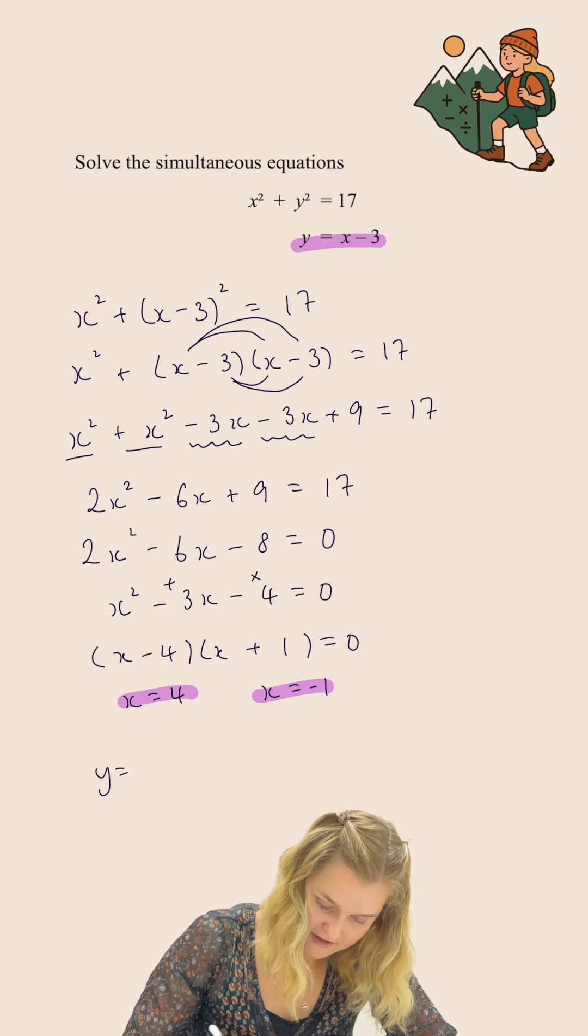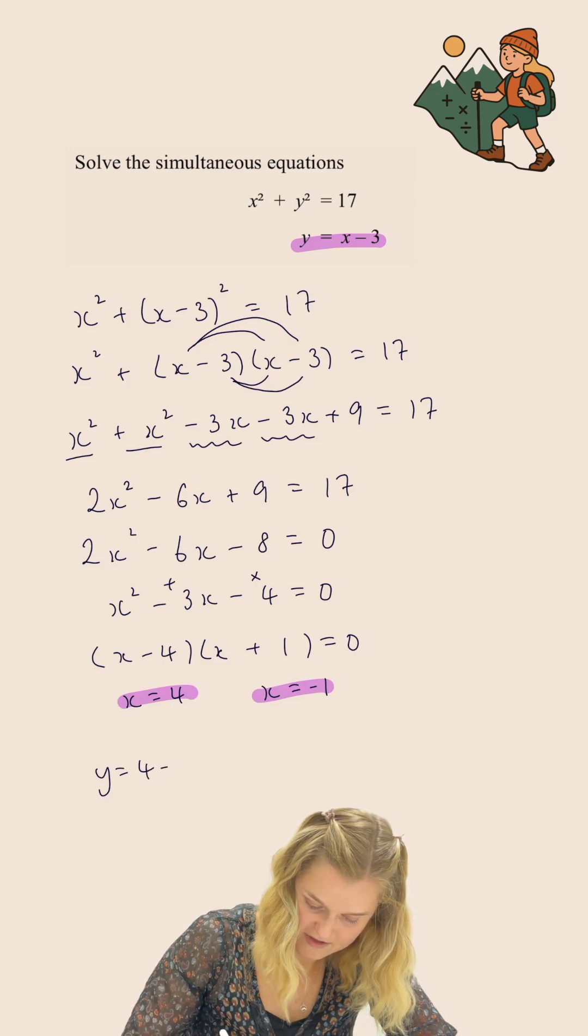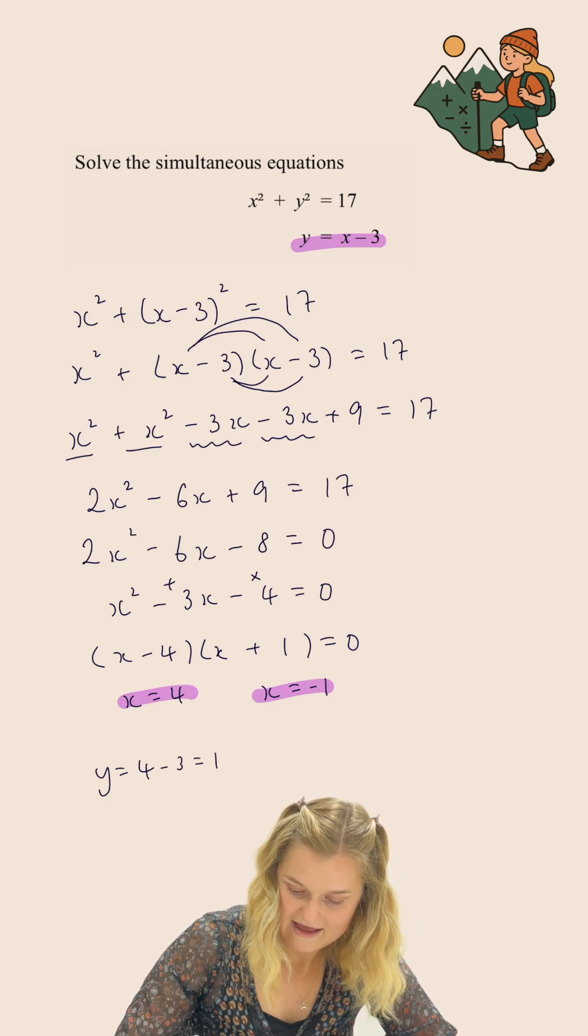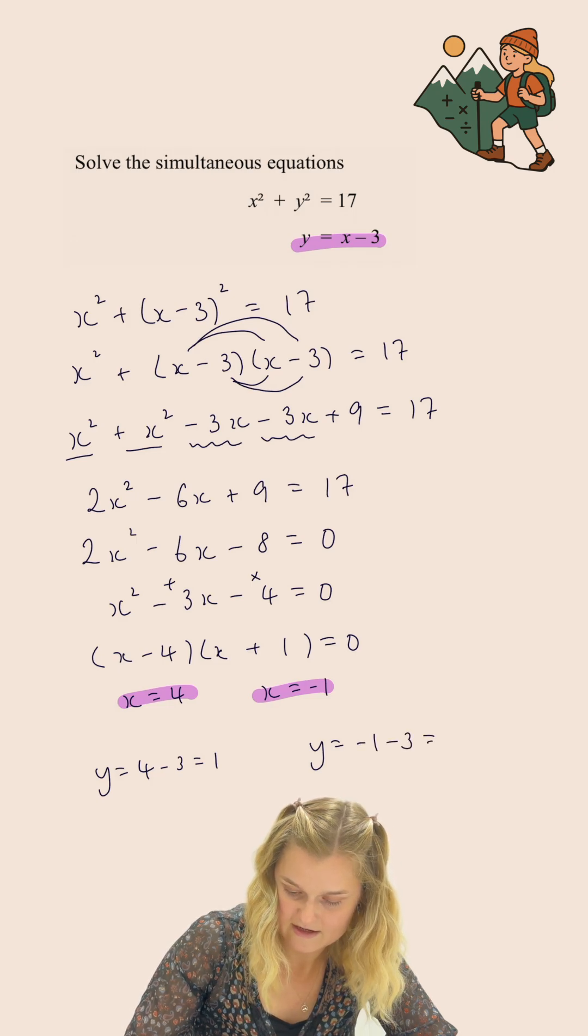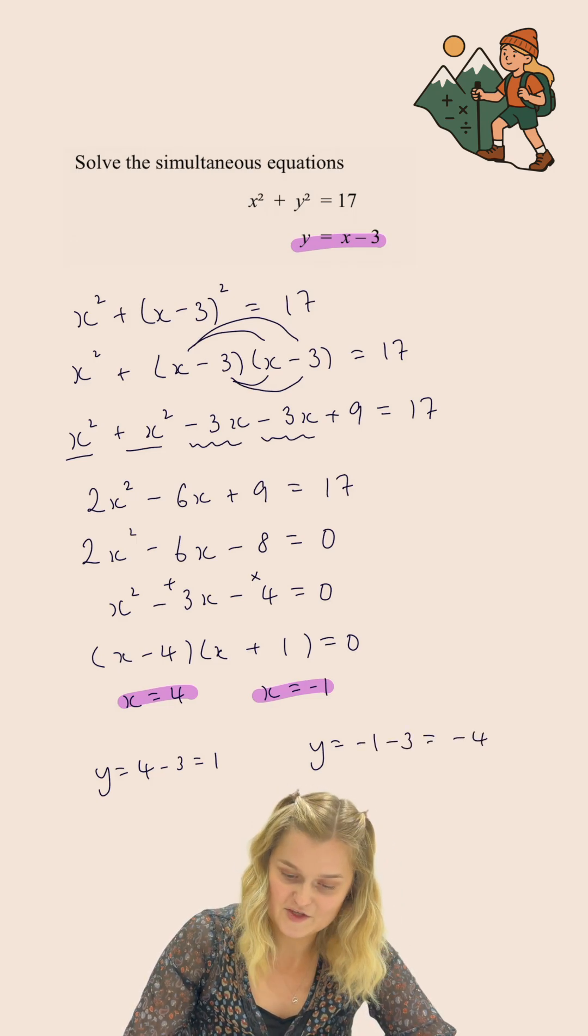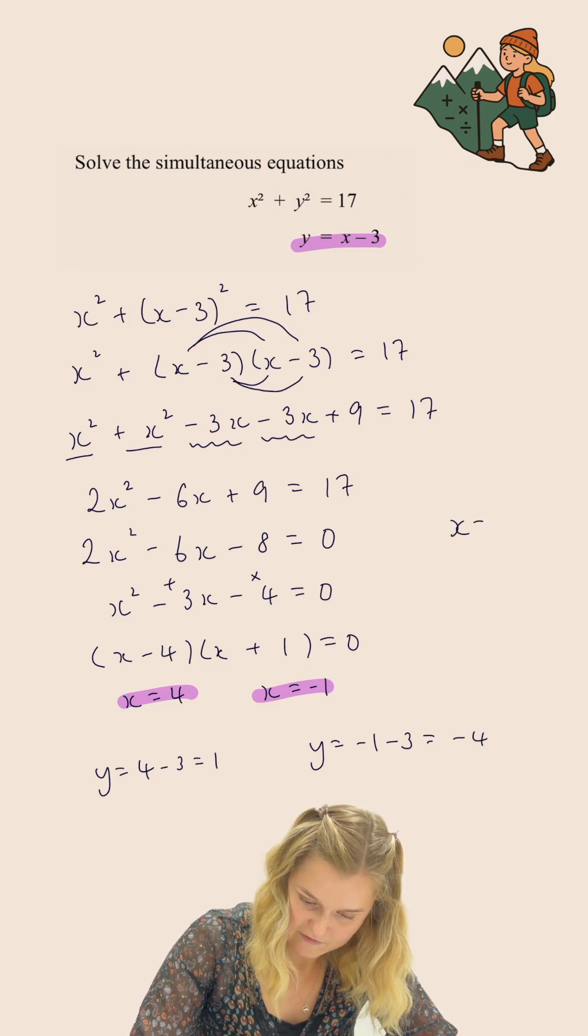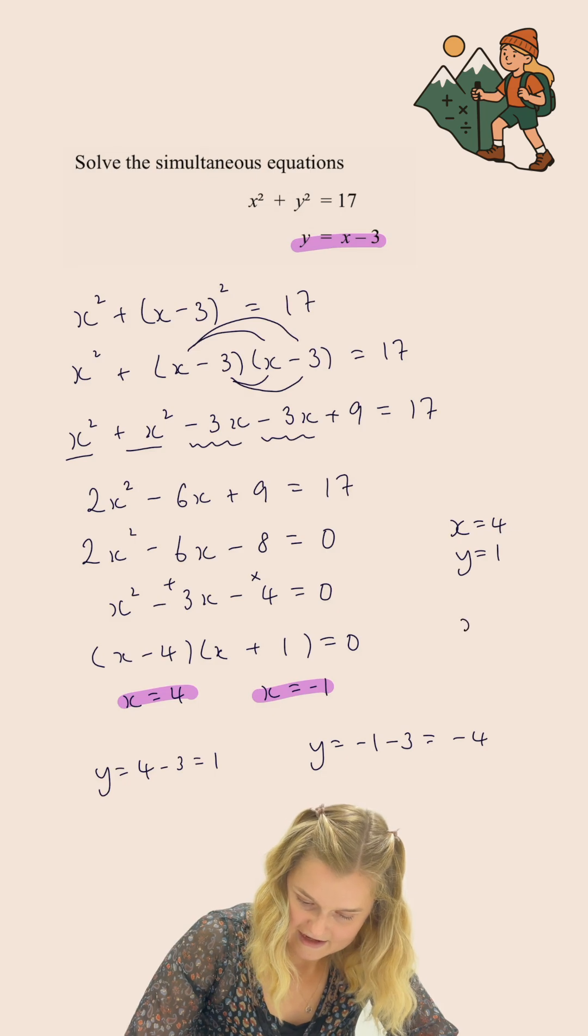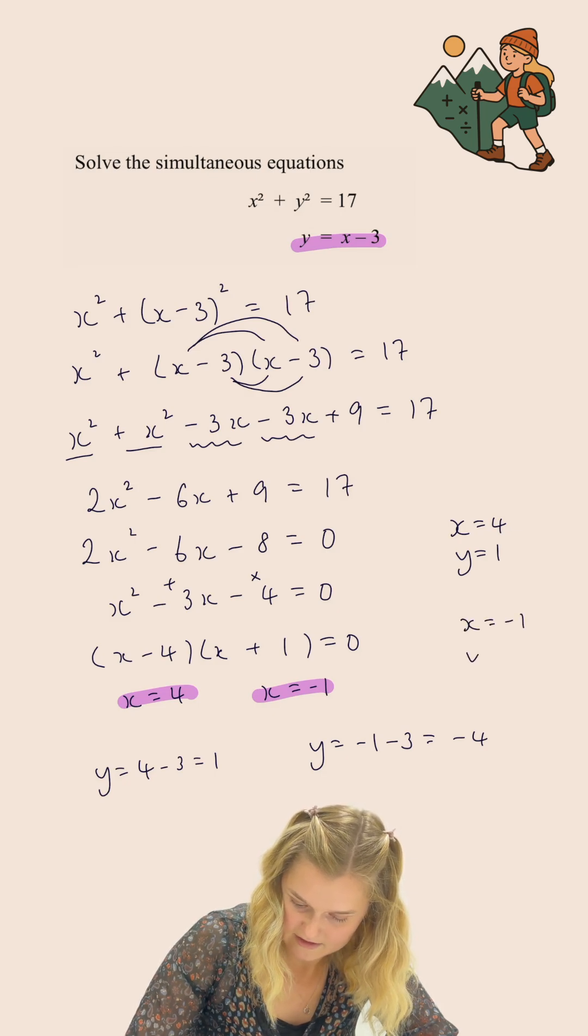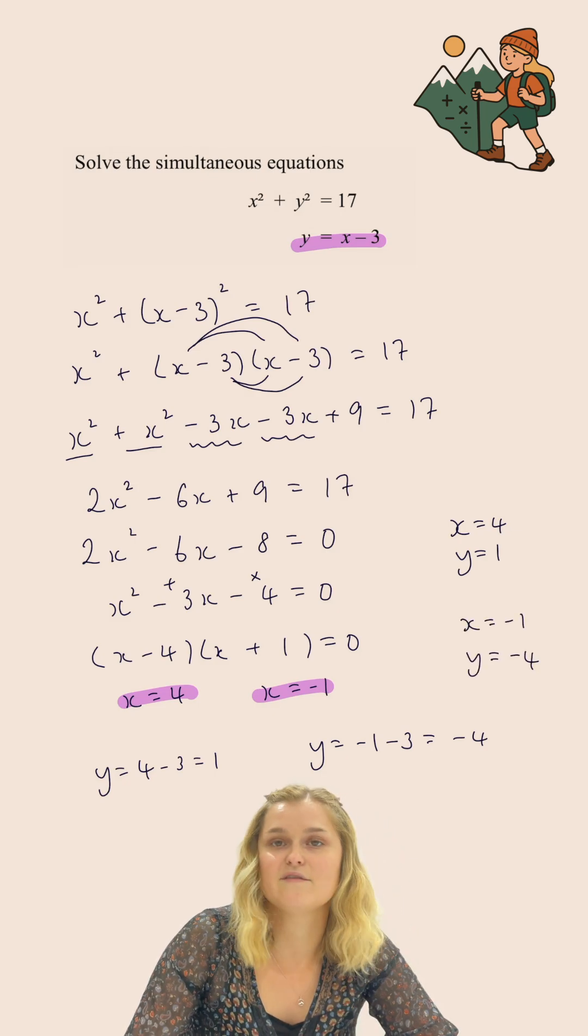So y is going to equal 4 minus 3, which is 1, and y is going to equal negative 1 minus 3, which is negative 4. And so my final answer is x equals 4 and y equals 1, and x equals negative 1 and y equals negative 4.